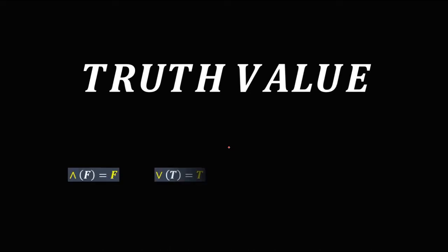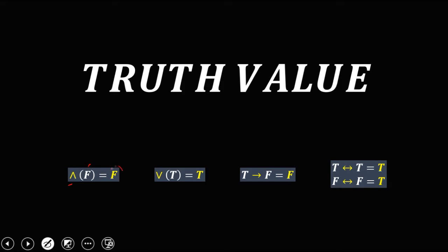Finding the truth value of a compound statement. These are the guides for the different connectors. For conjunction, if there is false, then the truth value is false. For disjunction, if there is true, then the truth value is true. For implication, if true implies false, then the truth value is false. For biconditional, if the values are the same, then the truth value is true.